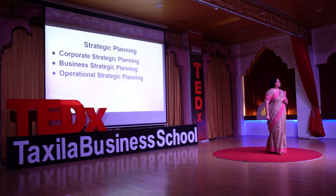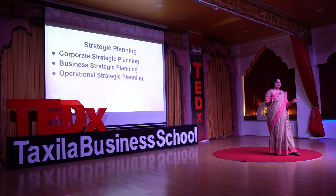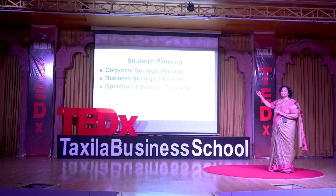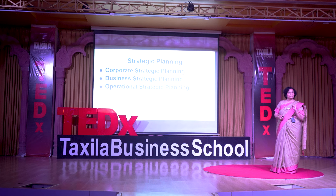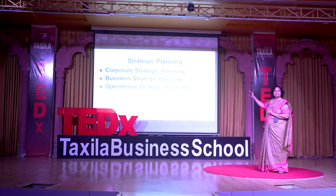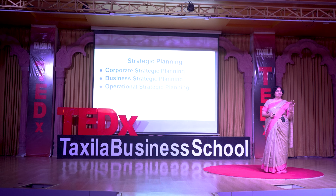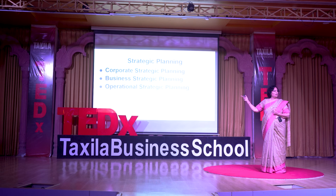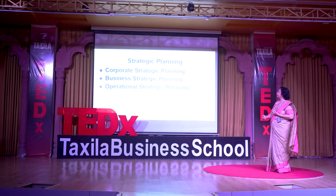In strategic management or strategic planning there are three levels that everybody has studied. Corporate strategic planning is the top level, where high-valued people design everything for the organization. Business strategic planning is the middle level, making policies on how to meet the vision and mission. And third is operational strategic planning - the supervisory level, who are actually implementing and working.